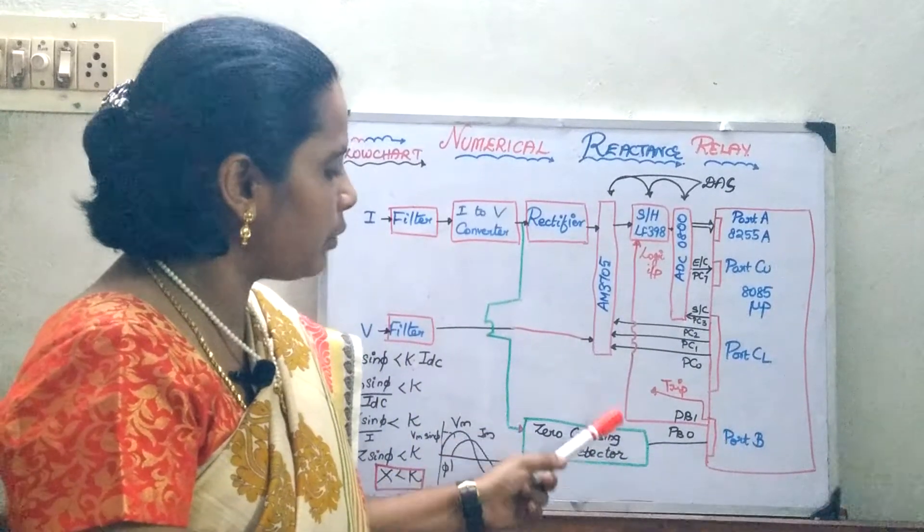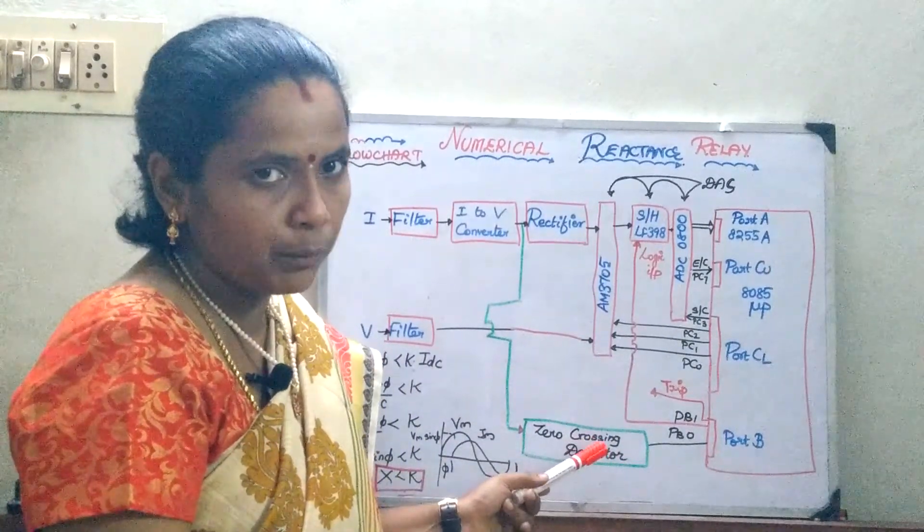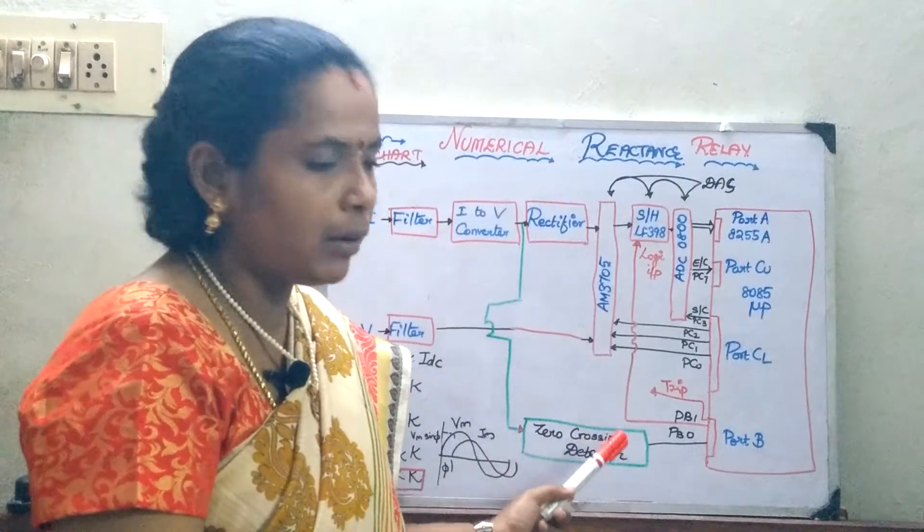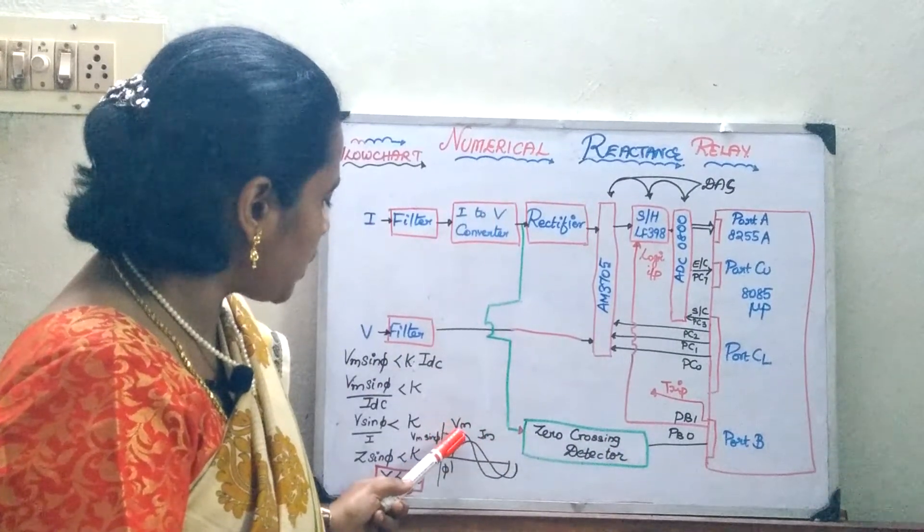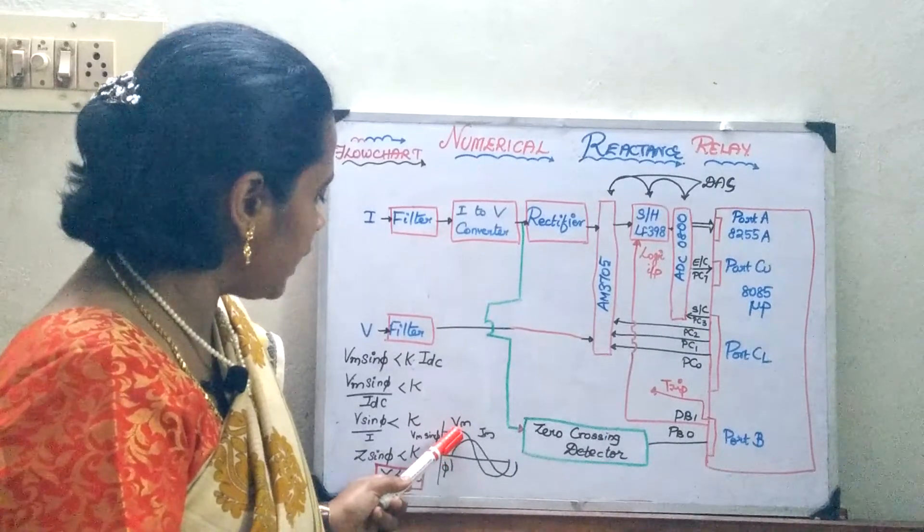The next thing you should know here, only one change is what we have done is added a zero crossing detector because we have to measure the reactance. When this Vm sine phi, you are going to measure the value of the Vm sine phi when the current has reached zero.